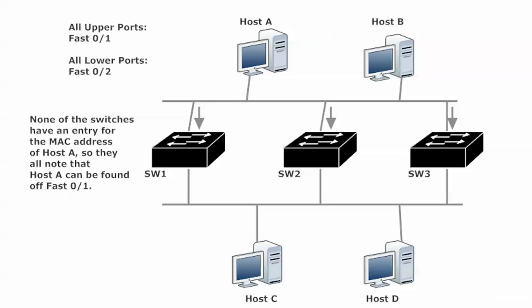Here we have two hosts at the top of our network, host A and host B, and two more at the bottom, host C and host D, along with our three switches. All their upper ports are fast Ethernet 0/1 and all lower ports are fast Ethernet 0/2.